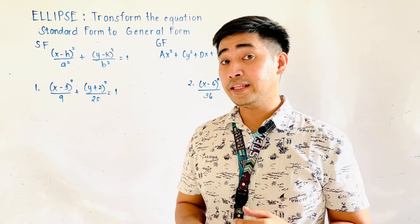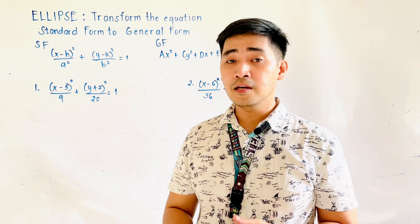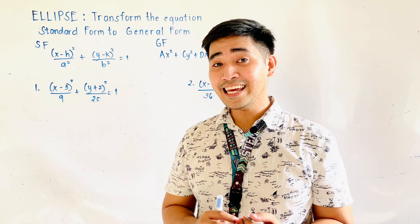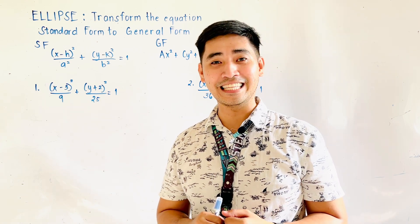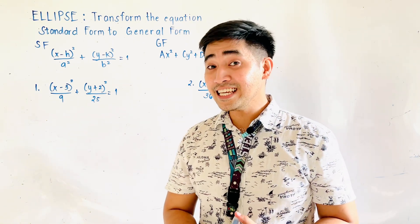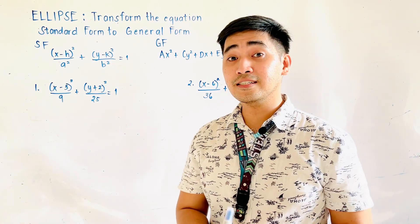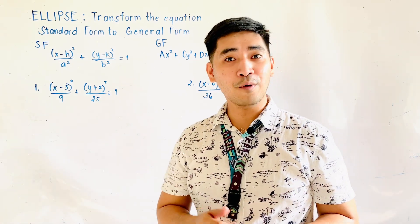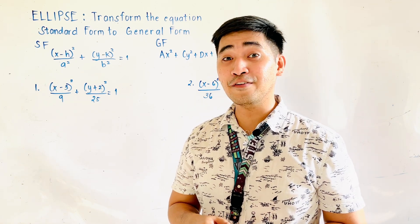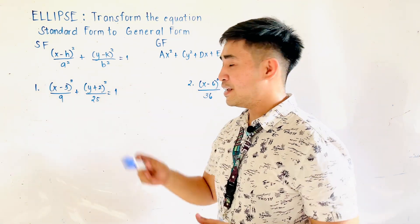Last time, we were able to identify the standard and general form of an ellipse, and we were able to transform the general form into its standard form by completing the square. But for today, since we are now given the standard form and we need to transform it into its general form, we will be finding the least common denominator. Let's have our example.